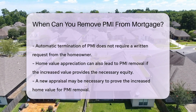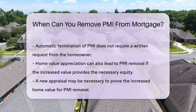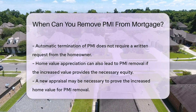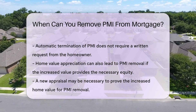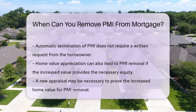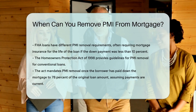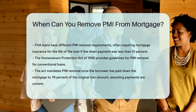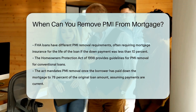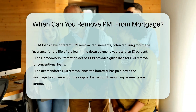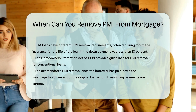Some loan programs, like FHA loans, have different PMI removal requirements. For example, FHA loans require mortgage insurance for the life of the loan if the down payment was less than 10%. For conventional loans, the Homeowners Protection Act of 1998 provides guidelines for PMI removal.